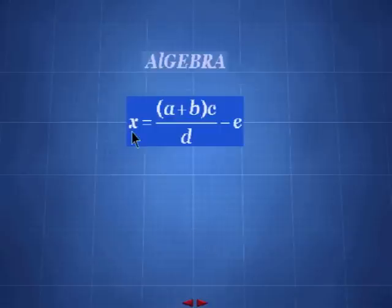Here we have a formula. It means that to find the value of x, we must add a and b. We only do this first because it's in parentheses, so we do the operation in parentheses first. Next we do the multiplication - in this case we multiply by c. Then we do the division - in this case we divide by d. Finally we subtract e.